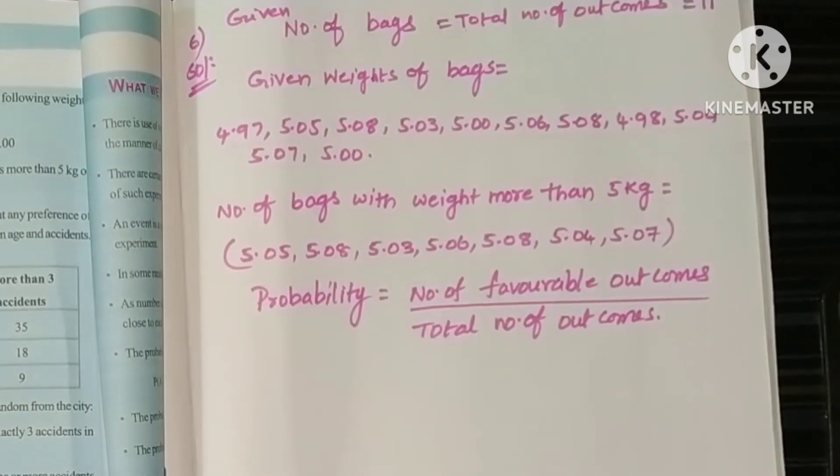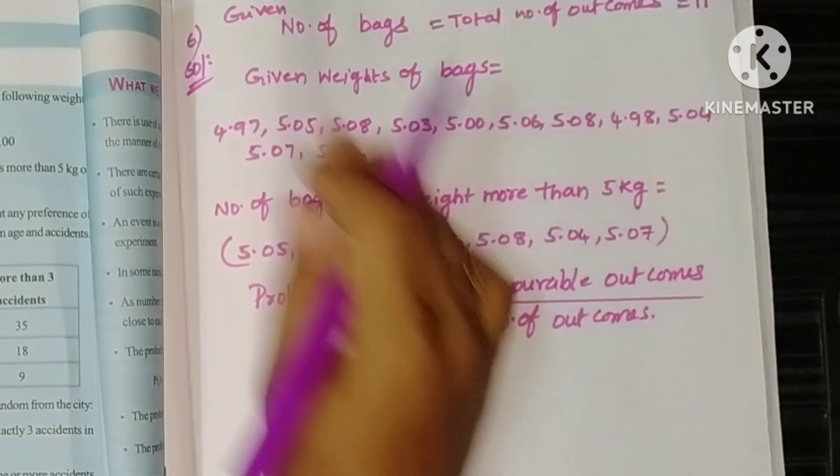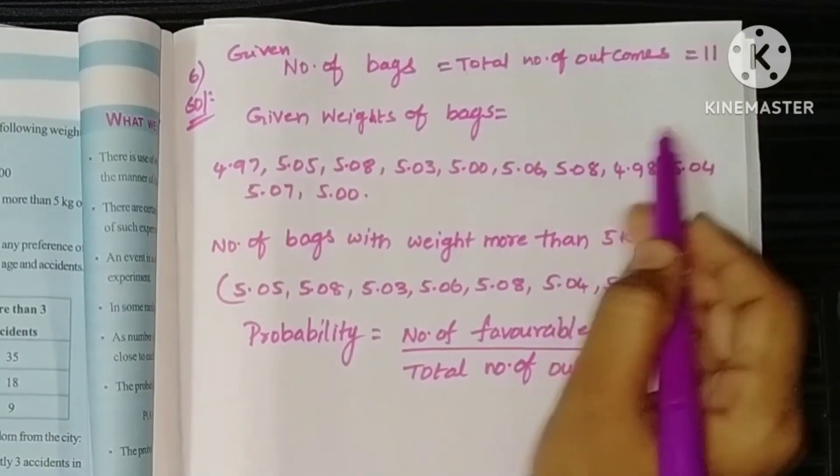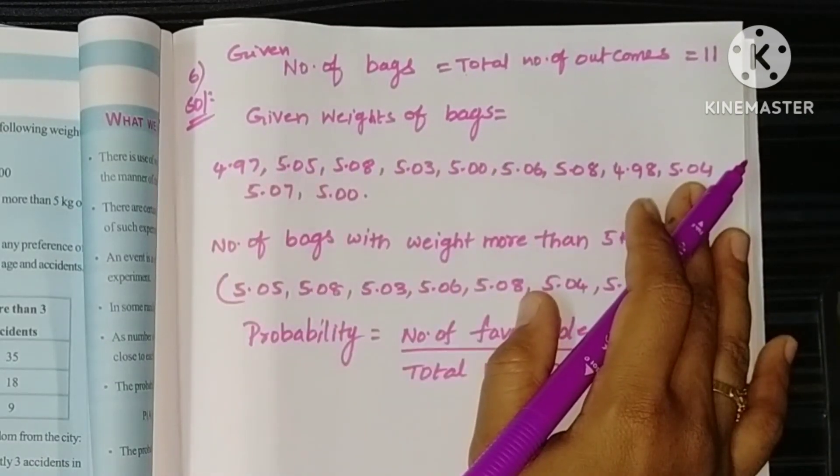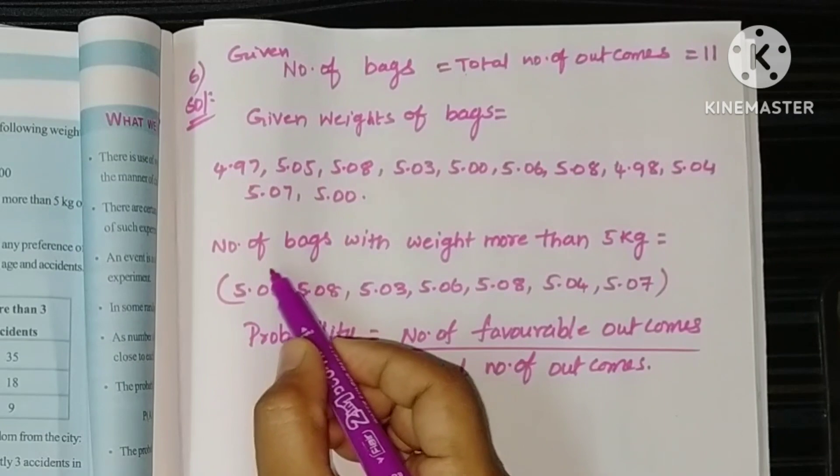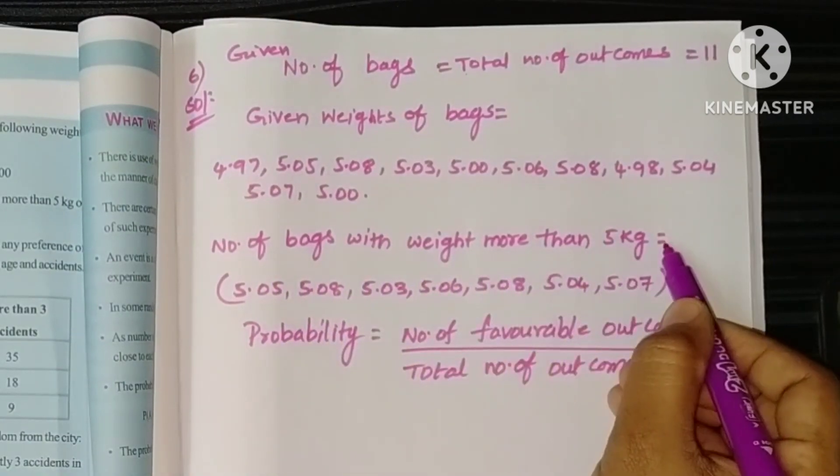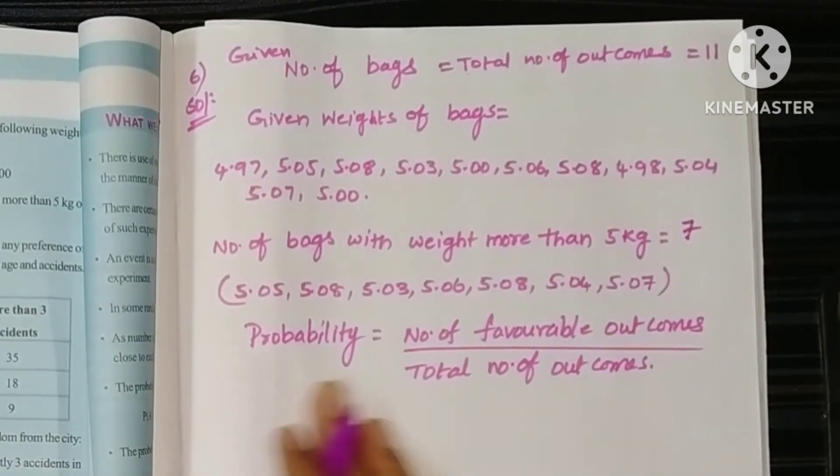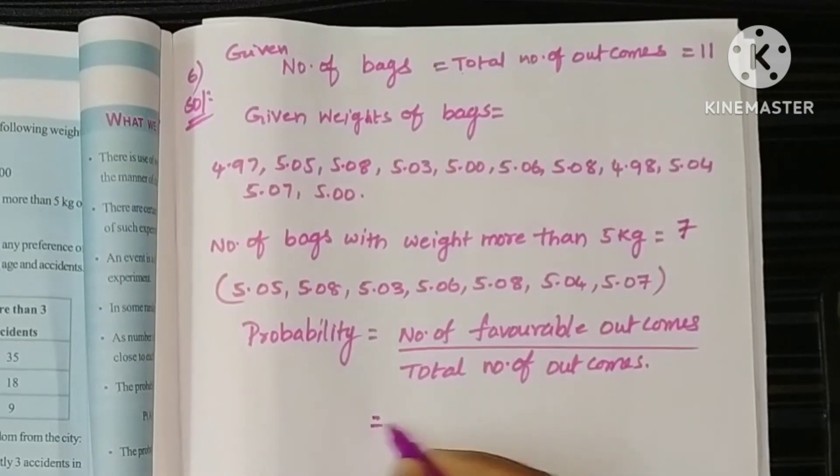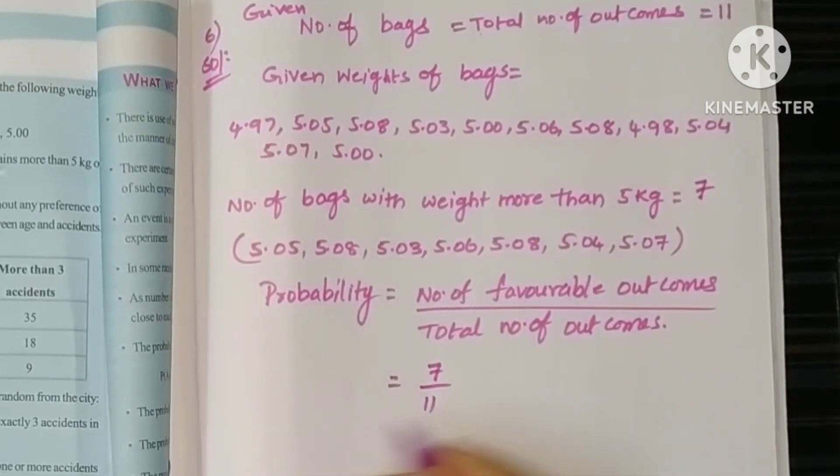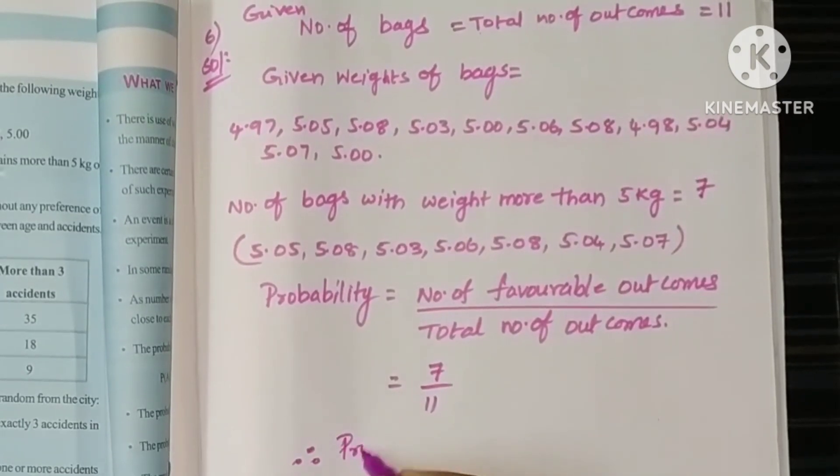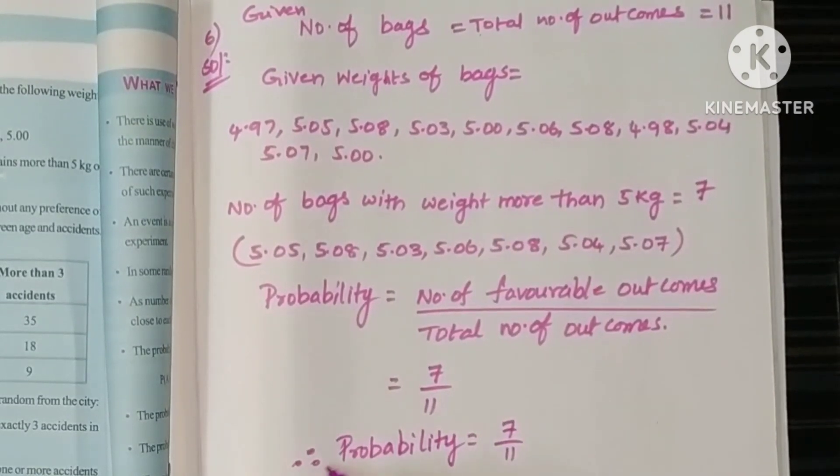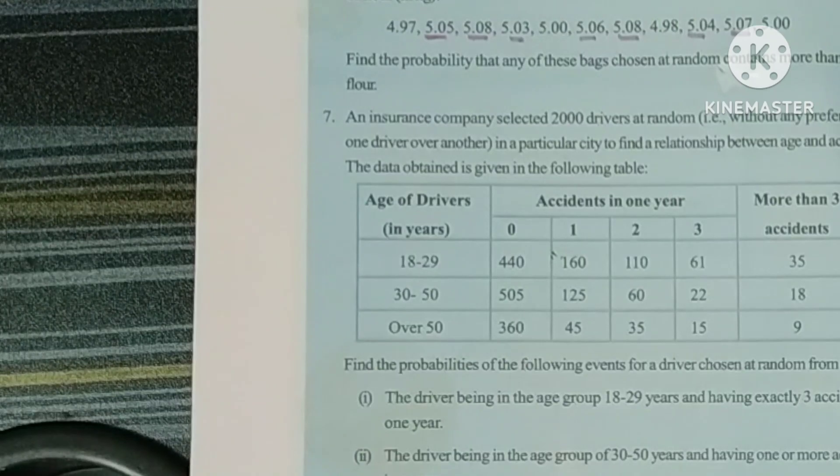Let me write the steps. First, given number of bags is total number of outcomes, so that is 11. Weight of bags, okay, just for the steps. Now number of bags with weight more than 5 kg, how many? Seven. So probability equals number of favorable outcomes by total number of outcomes, simply 7 by 11. Therefore, probability equals 7 by 11.